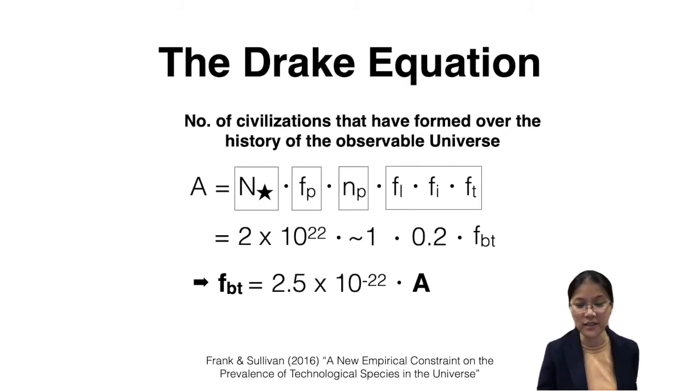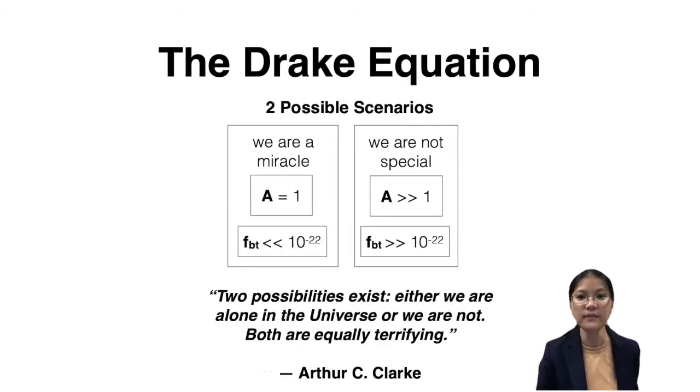So these two scenarios: in the first one is essentially we are a miracle. It's so hard to make all these milestones happen, and so this factor is very, very small, and we're just lucky enough to be the one where it all came together. A equals one, and that's just us. We are alone.